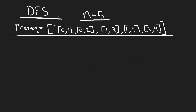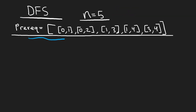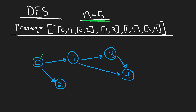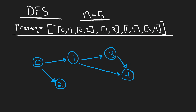We can solve this problem using depth first search. I'll show you the DFS version. Given a new example, let's visualize it. We have five nodes: zero, one, two, three, and four. We're given five prerequisites, giving us five edges: zero to one, zero to two, one to three, one to four, and three to four.